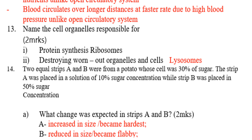Question number 14: two equal strips A and B were cut from a potato whose cell sap was 30% sugar. Strip A was placed in a solution of 10% sugar concentration, whilst B was placed in 50% sugar concentration. What changes were expected? Strip A increased in size and became hard, because it is in a less concentrated solution. Strip B reduced in size and became flabby.